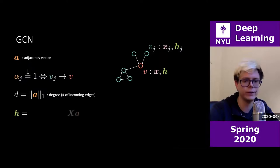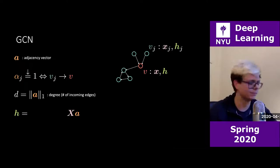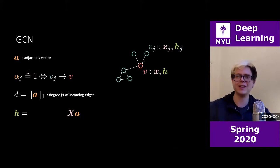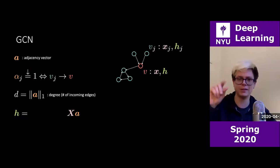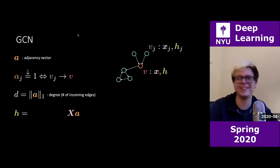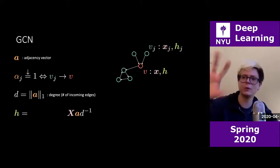In self-attention, the hidden layer was h equals X times a — the columns of X scaled by factors in a. First issue: if you have multiple ones, h will be larger for vertices that have many incoming connections, making it proportional to the degree. The fix is to divide by D — multiply by D to the minus one.